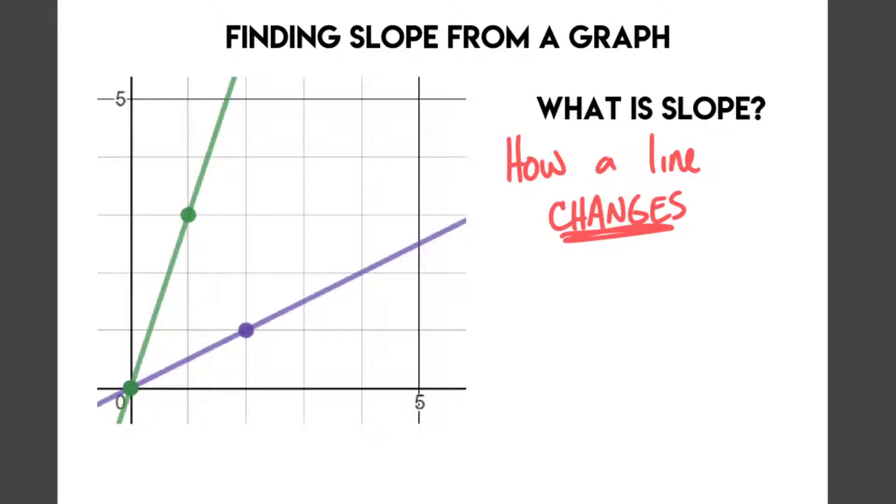Because slope is how a line changes. So how fast a line changes is what slope is. This one, for example, the green one over here, has a bigger slope. It has a slope of 3 over 1, and the purple line has a much smaller slope of 1 over 2. So this one simply has a larger slope, and so it is changing a lot faster. We're looking at how fast something changes.